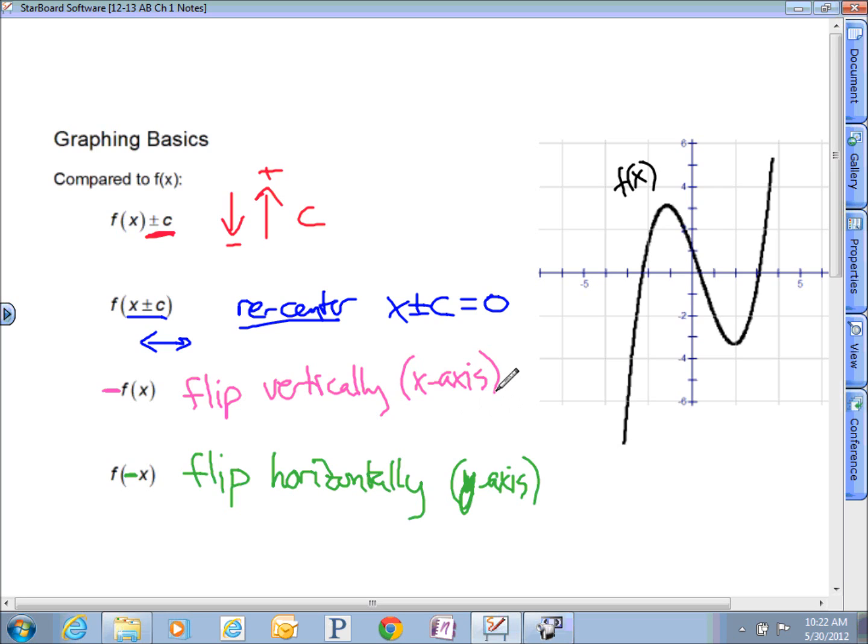If you want a quick visual on this, think about what it would look like if you put a negative on your x-squared. It would take that parabola and it would make it open down instead of your normal x-squared parabola that would open it up. That's the difference. That's what flipping vertically means.